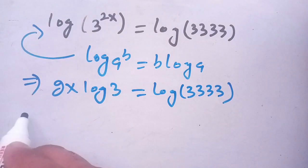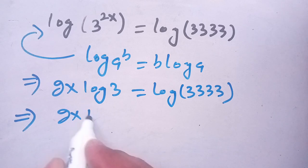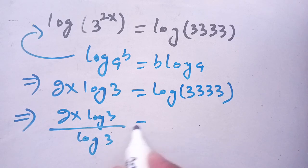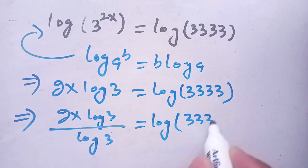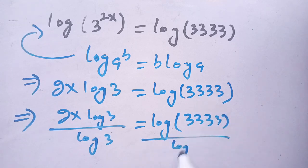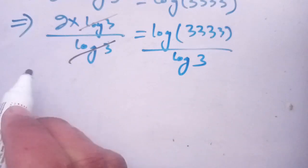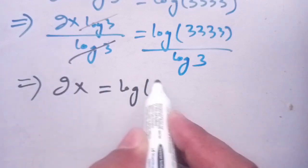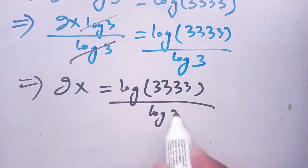Now, in the next step, dividing both sides by log of 3, we get 2x times log of 3 divided by log of 3 is equal to log of 3333 divided by log of 3. We can cancel out log of 3, which gives 2x is equal to log of 3333 divided by log of 3.